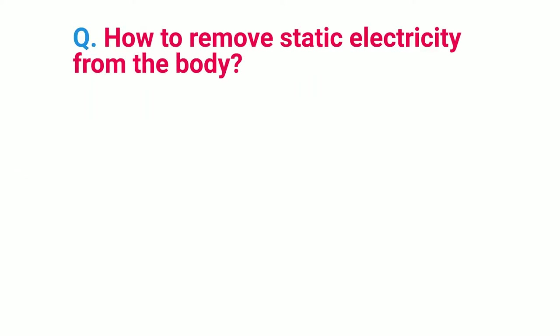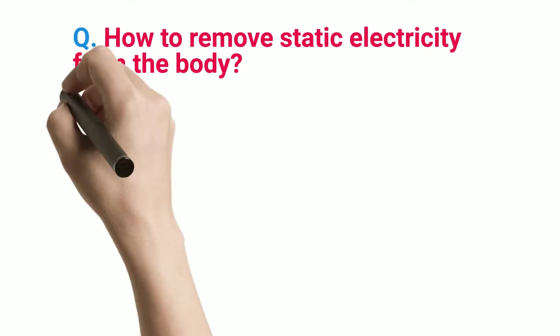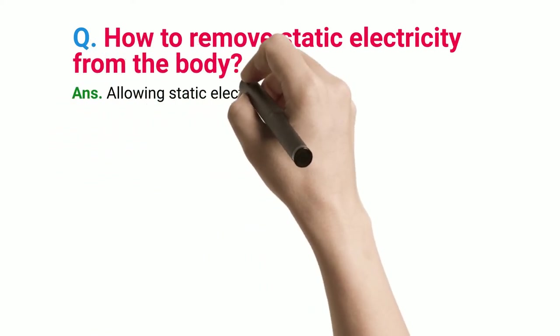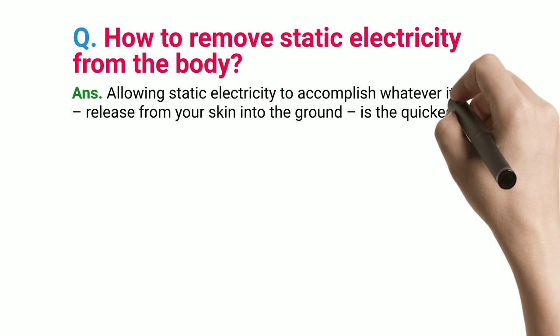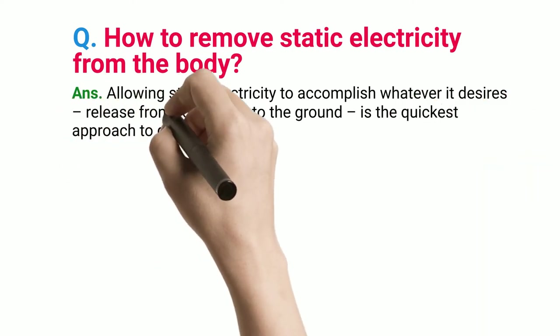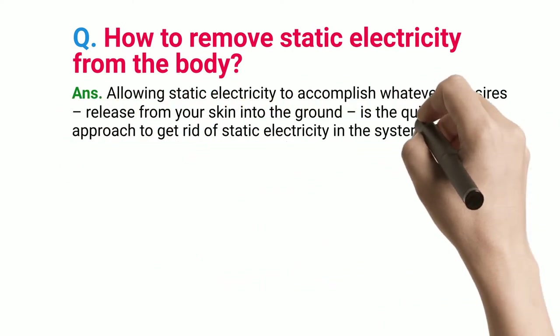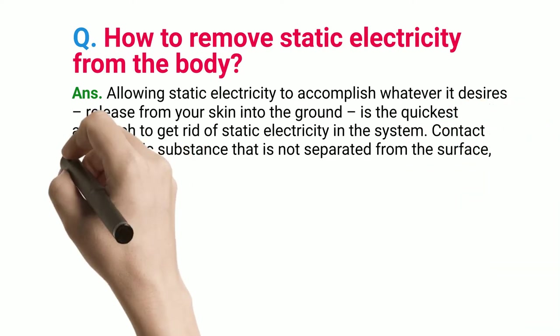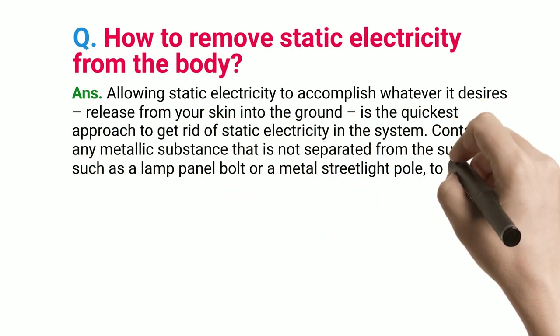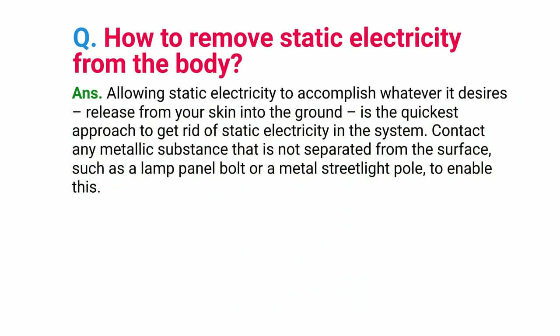How to remove static electricity from the body? Allowing static electricity to discharge from your skin into the ground is the quickest approach to get rid of static electricity in the body. Contact any metallic substance that is not separated from the surface, such as a lamp panel bolt or a metal streetlight pole, to enable this.